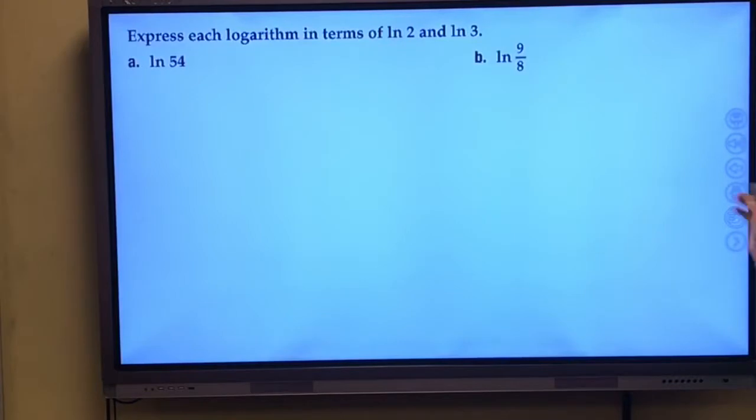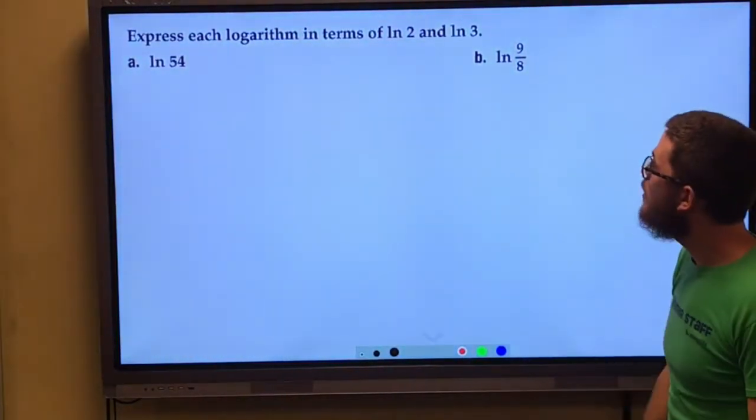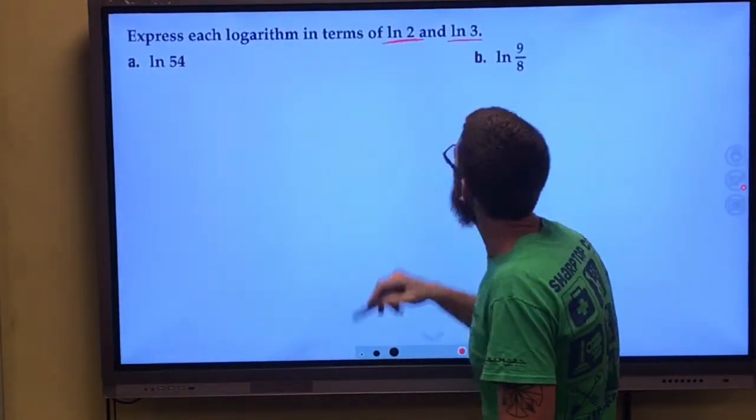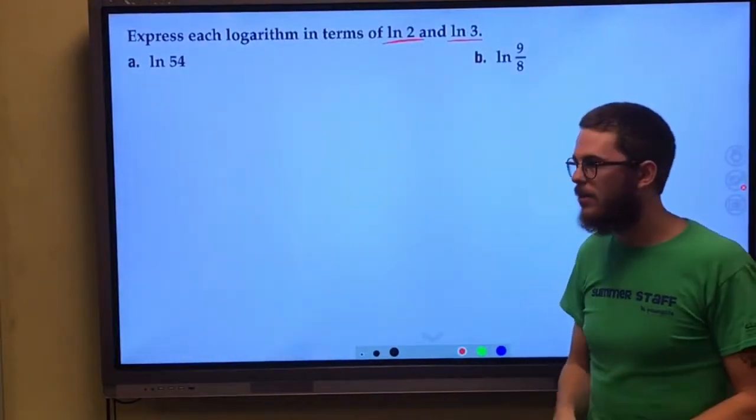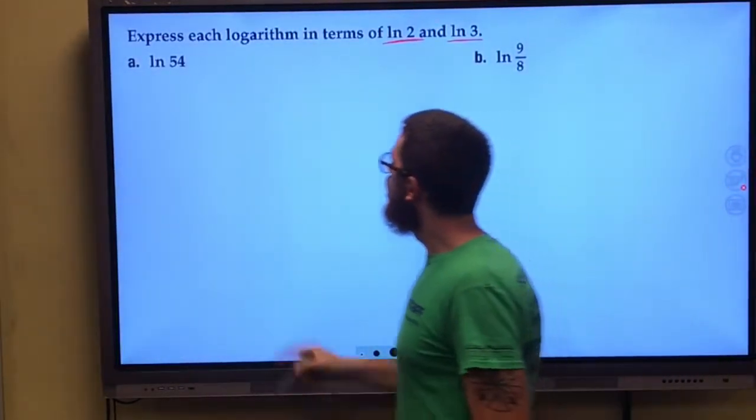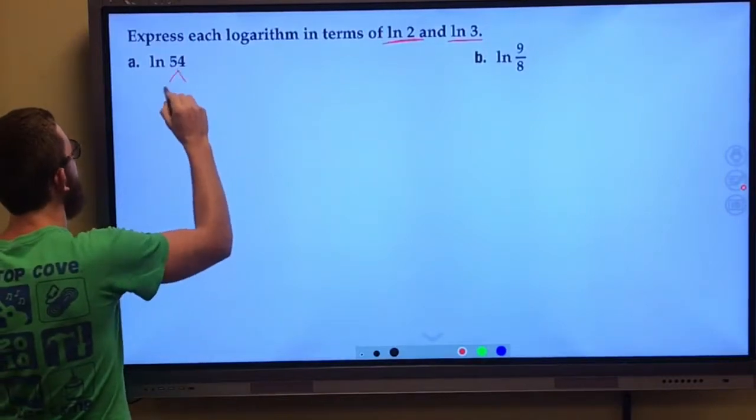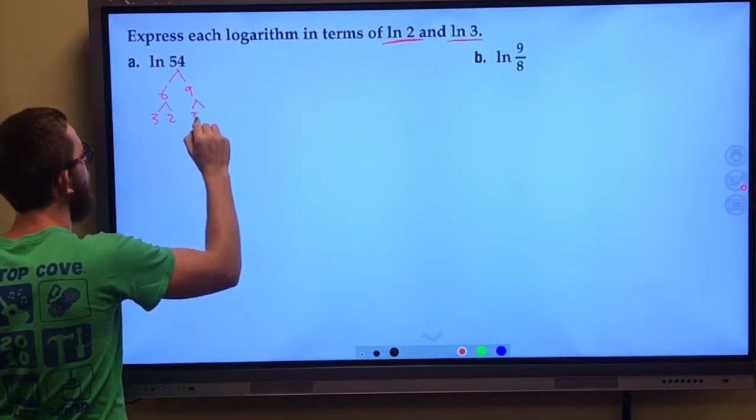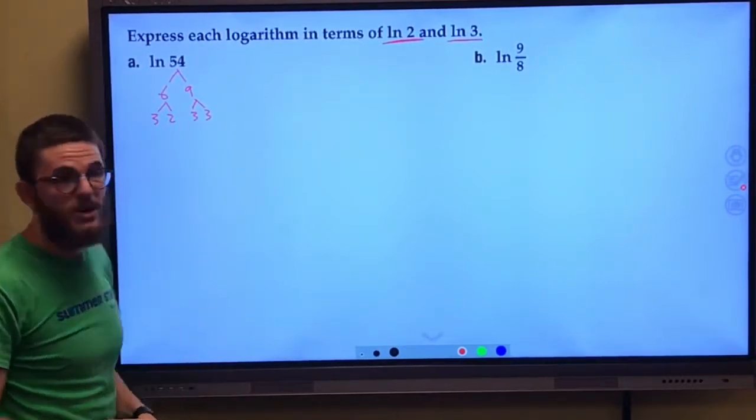So let's use these in some unusual ways. Here it says natural log of 54, and notice our instructions say express each logarithm in terms of natural log of 2 and natural log of 3. So in the end, we're basically rewriting this showing that we understand these properties. Well, 54, how can we break down 54? 54 is 6 times 9, which is 3 times 2, and 9 is 3 times 3. So I'm just getting this in terms of 3s and 2s.